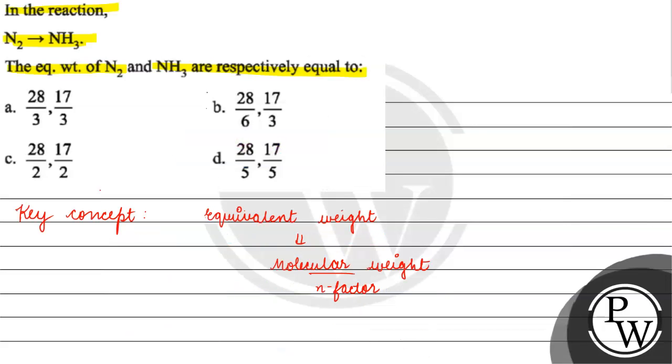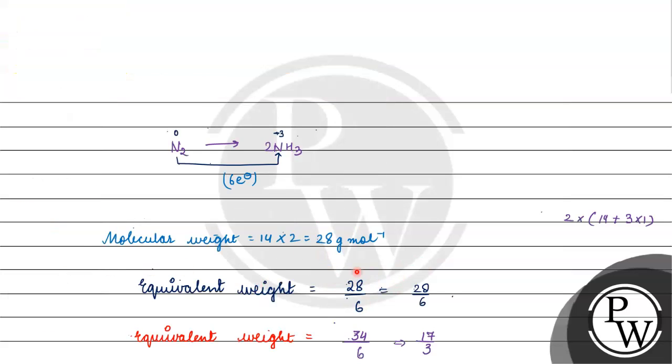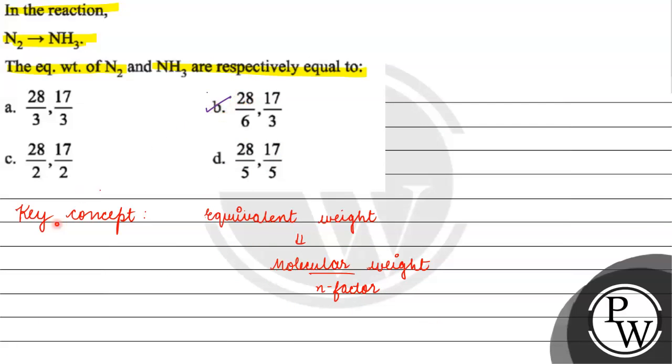Coming back to the question, correct answer for this question would be option B. Always remember our equivalent weight basically is molecular weight by number of electrons involved for that particular species. So our equivalent weight of nitrogen will be 28 by 6 and equivalent weight of ammonia is 34 by 6, which is 17 by 3. I hope you understood it well, thank you and all the best.